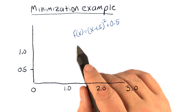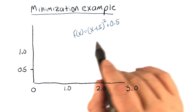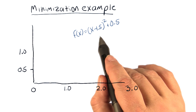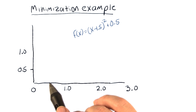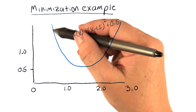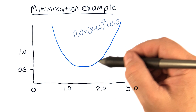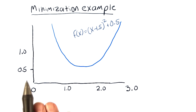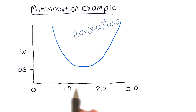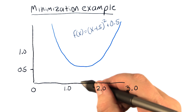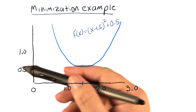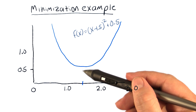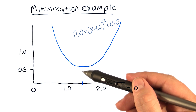Let's take a look at this function. f of x is equal to x minus 1.5 squared plus 0.5. That function is a parabola that looks something like this. It's centered horizontally at 1.5, and its minima is here at 0.5.